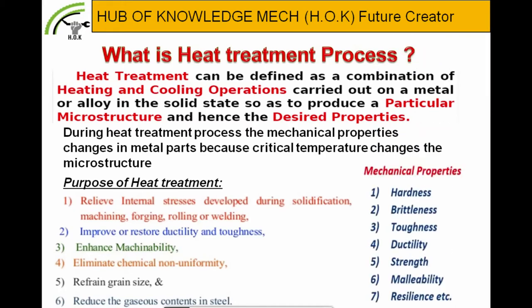Some mechanical properties that improve due to heat treatment process include hardness, brittleness, toughness, ductility, strength, malleability and resilience. After forging, welding and machining, steel parts undergo changes in microstructure and internal stresses are generated that disturb the mechanical properties of steel. So for improvement in mechanical properties and removing internal stresses, the heat treatment process is to be done.